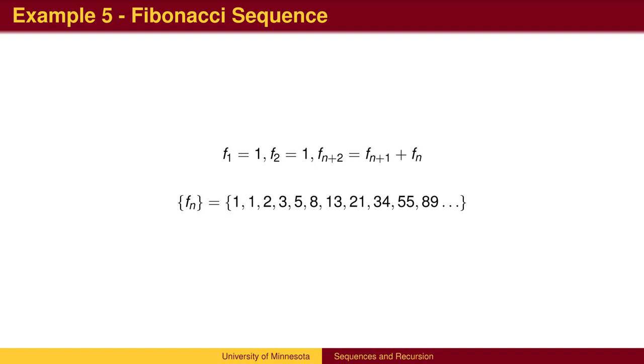Sometimes, a recursive formula can depend on two or more previous terms in the sequence. A famous sequence is the Fibonacci sequence. To get the third term, we add the first two terms. To get the fourth term, we add the two previous terms.